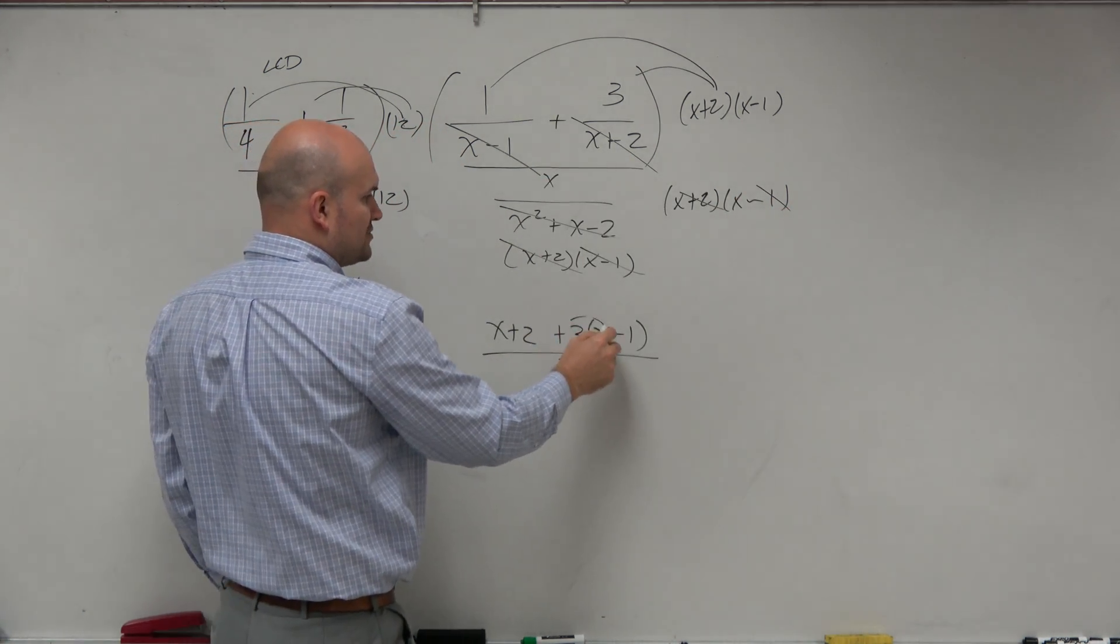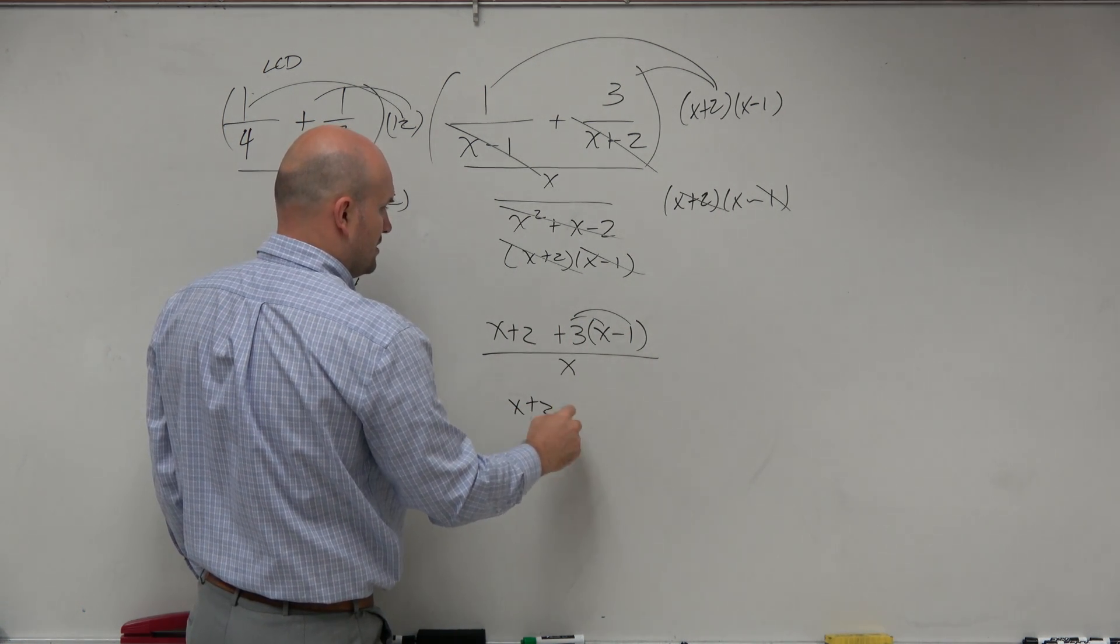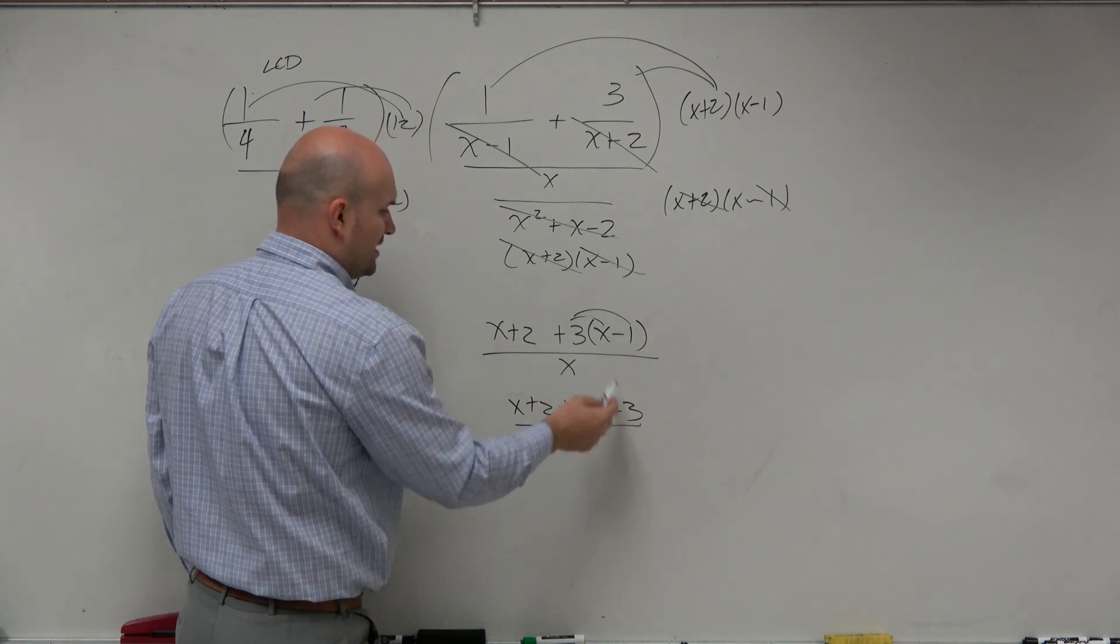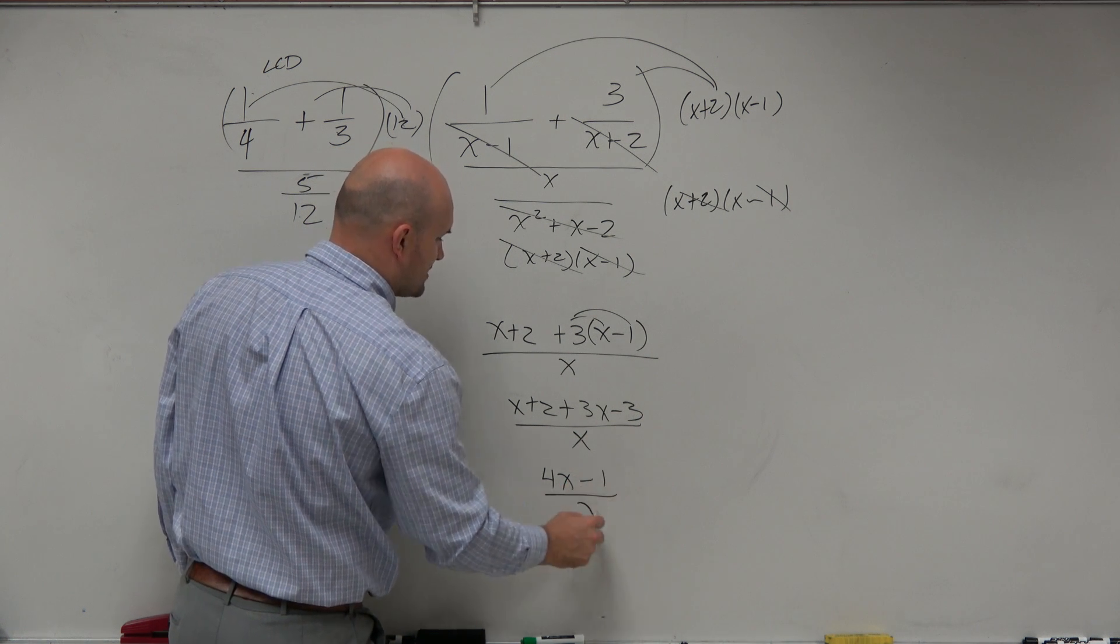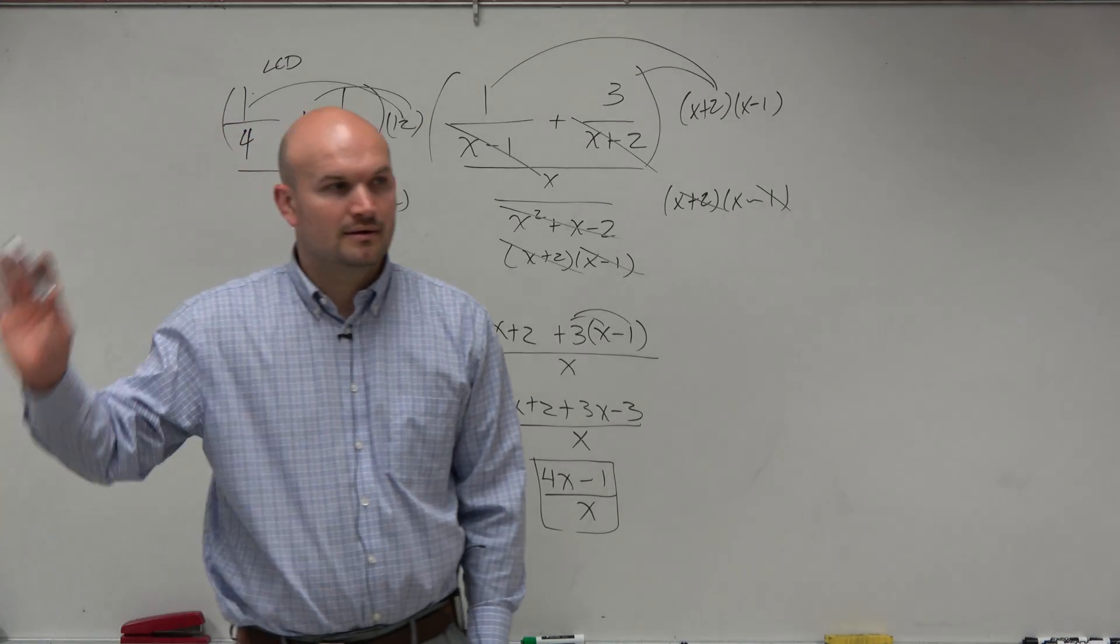So now I can just apply distributed property in the numerator and I get x plus 2 plus 3x minus 3 over x. And then I can combine like terms one more time and I get 4x minus 1 over x. And that'd be my answer. There we go.